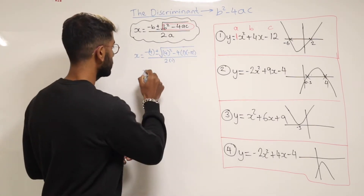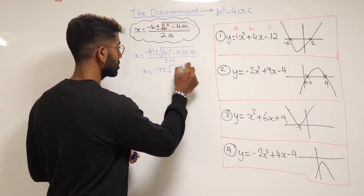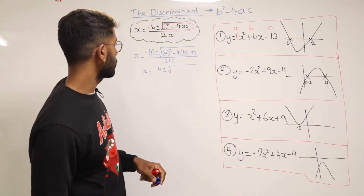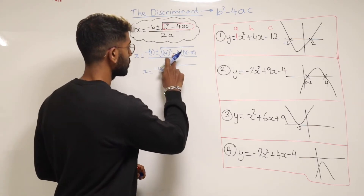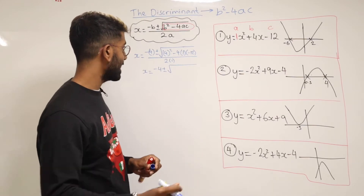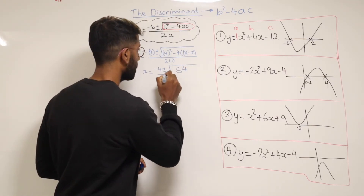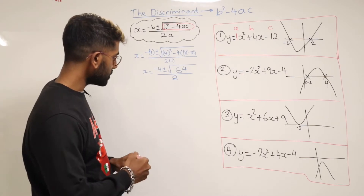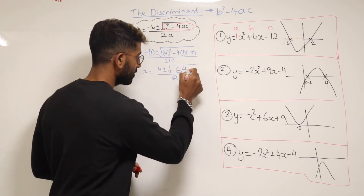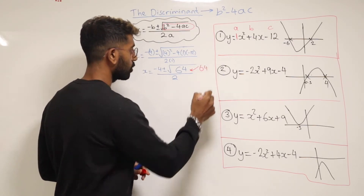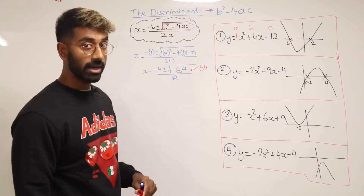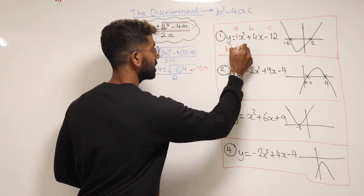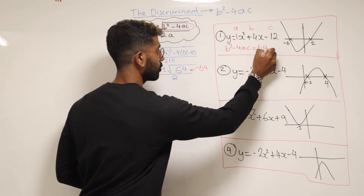Simplifying this down a little bit: minus 4 on the outside, plus or minus the square root of — 4 squared is 16, and 4 times 12 is 48, but because we've got minus and minus it means we're going to add those together. So 48 add 16 is 64, and then over 2. The discriminant, that part in the square root, is equal to 64 — a positive number. So b squared minus 4ac equals 64.